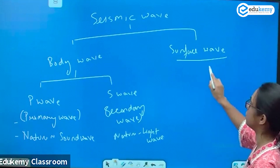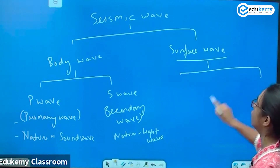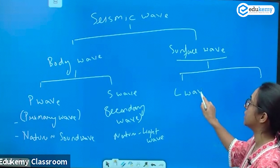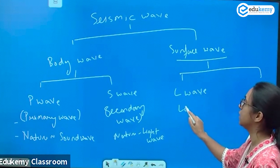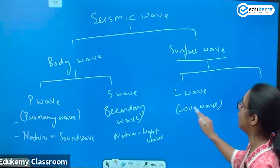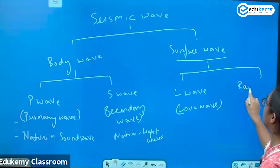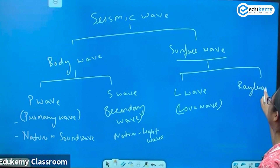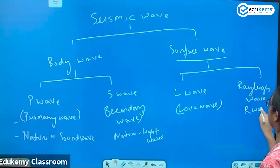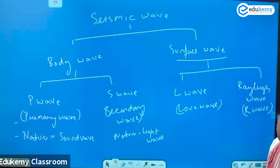Then we have surface waves. In the surface wave, we have the L wave, also known as the Love wave. And we have the Rayleigh wave, also known as the R wave. So the L wave and the R wave are the surface waves.